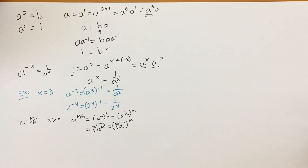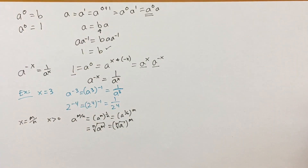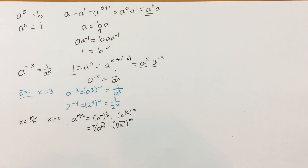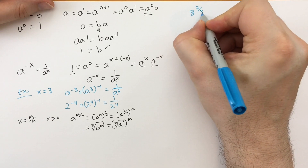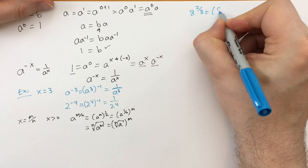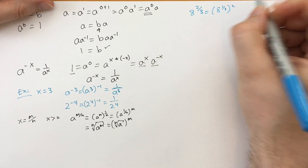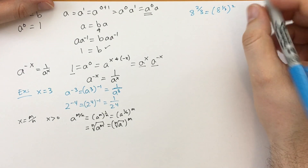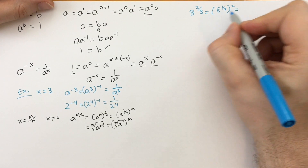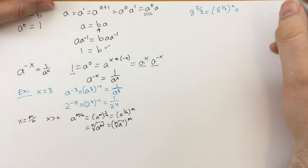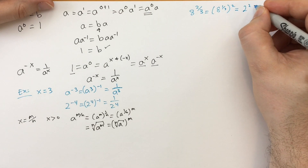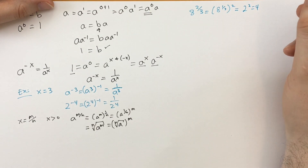More examples: 8 to the two-thirds. That's 8 to the one-third times two, or squared. What's 8 to the one-third? Something times itself three times equals 8 — that's 2, since 2×2×2=8. So it's 2 squared, which equals 4.